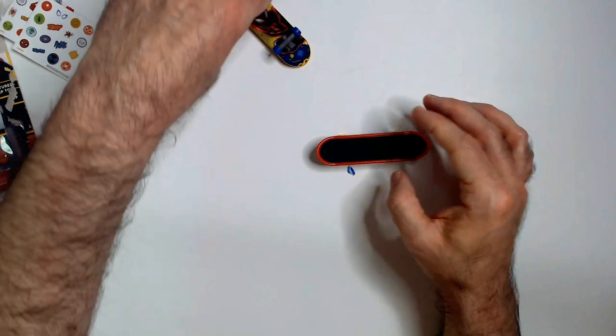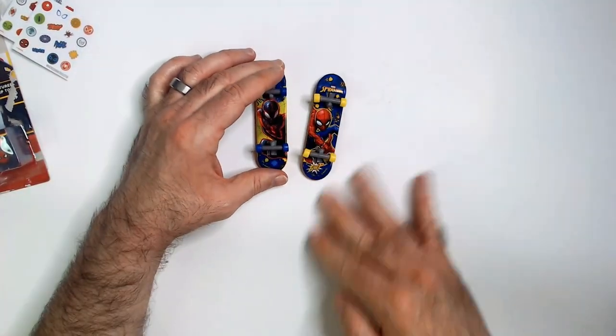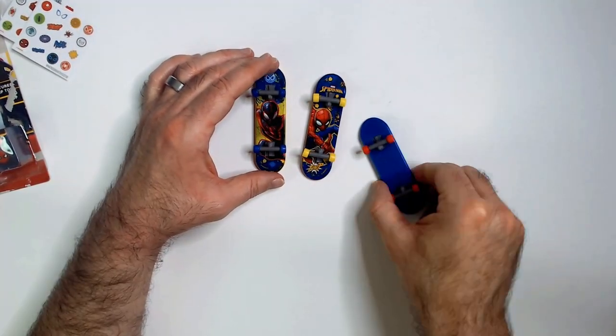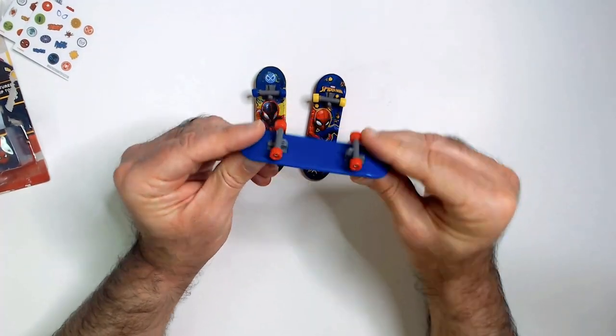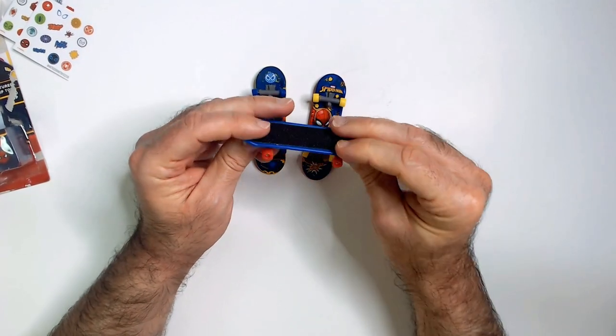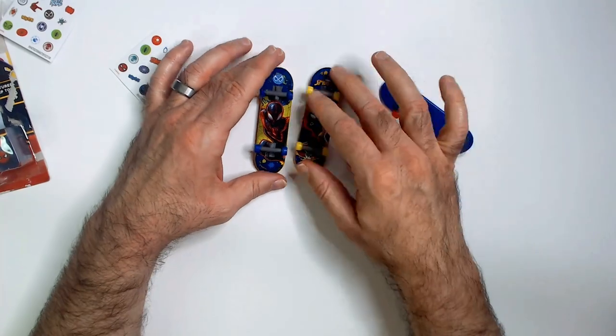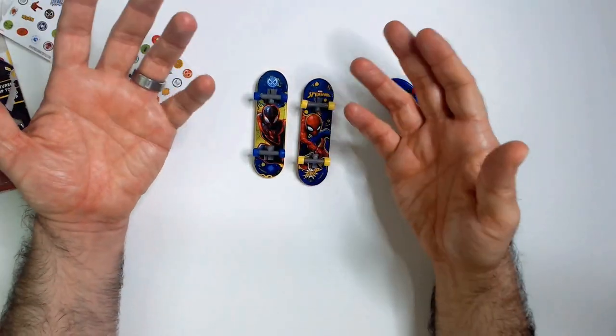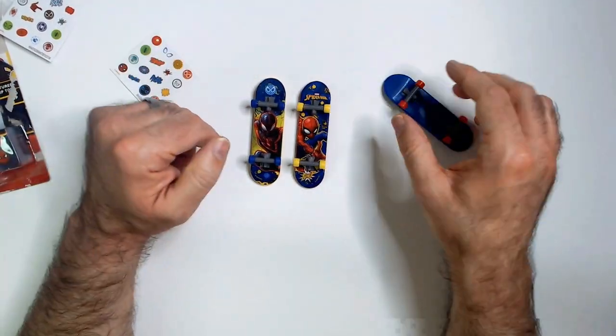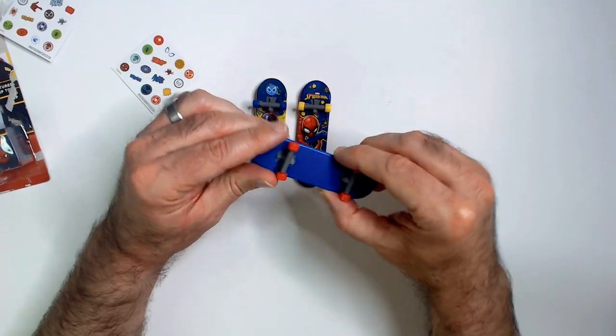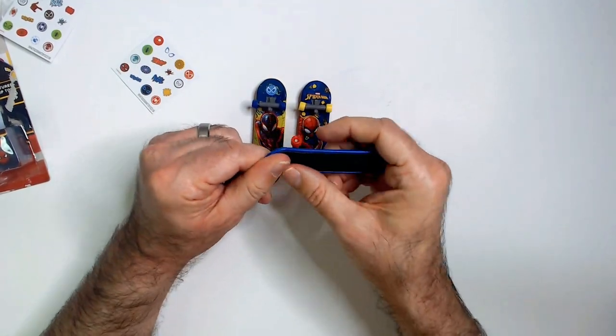So who do we have? We have Spider-Man, some Miles, and oh, one to customize. I like that idea. That way if you don't want to mess up or put stickers on these because they have art already, you can put them on this blank one. Split blue one, that's pretty cool.